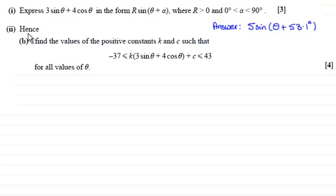Now, in part 2, it says, hence, find the values of the positive constants k and c, such that minus 37 is less than or equal to k multiplied by 3 sine theta plus 4 cos theta plus c, which is also less than or equal to 43 for all values of theta.